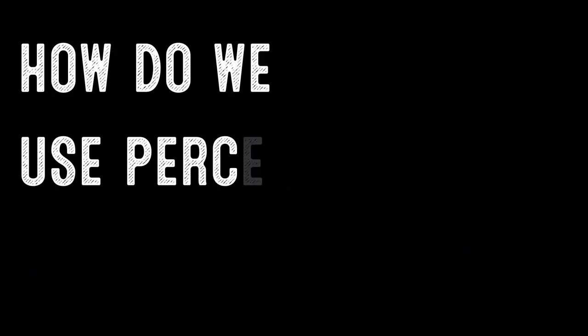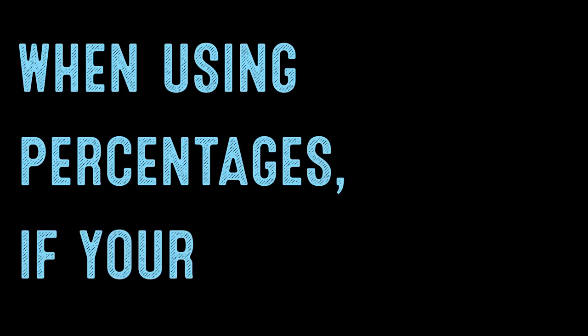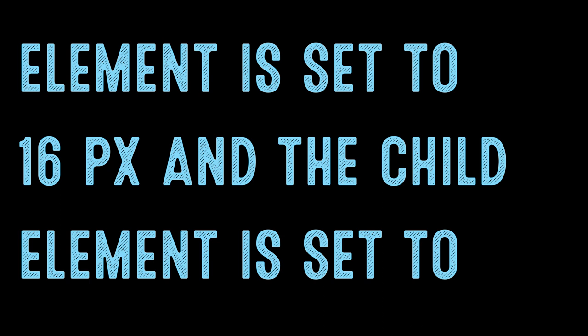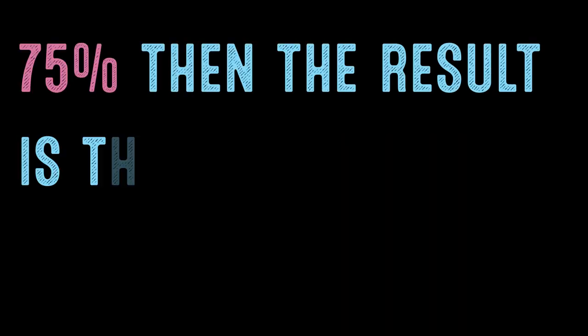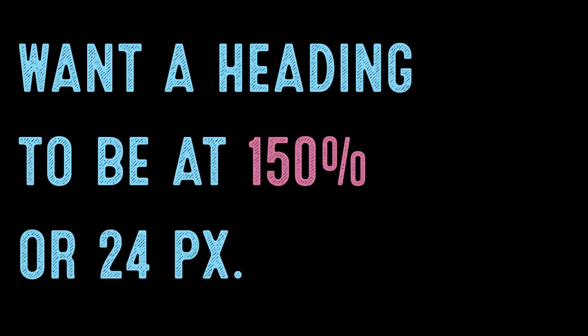How do we use percentages? When using percentages, if your parent element is set to 16 pixels and the child element is set to 75%, then the result is the font displayed at 12 pixels. You may want a heading to be at 150%, or 24 pixels.